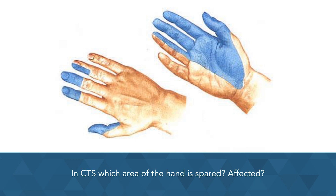A great trick for practicing hand innervation is to wear a glove and use a marker to mark out the affected areas — especially useful if you're a visual learner. Importantly, the palmar cutaneous branch of the median nerve, which supplies the central palm, arises proximal to the flexor retinaculum and passes superficial to it — not through the tunnel. So the central palm retains normal sensation. Many diagrams out there incorrectly show this area as affected, which is why this distinction is worth highlighting.